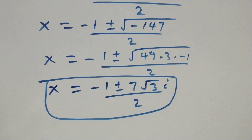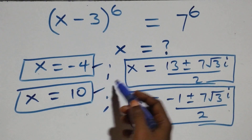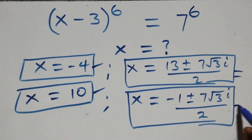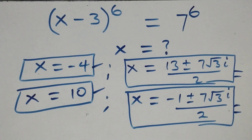Therefore, altogether we have six solutions to this problem: two real solutions (x equals minus 4 and x equals 10), two complex solutions from the first case, and two complex solutions from the second case. Thank you for watching — don't forget to subscribe for more videos, turn on the notification bell, share this video, give a thumbs up, and leave your comments.